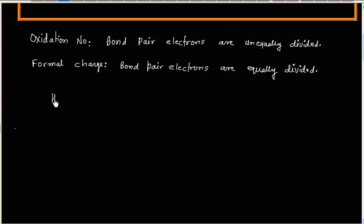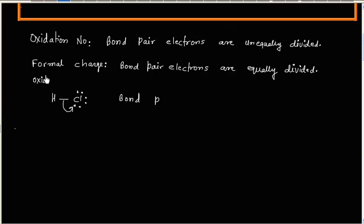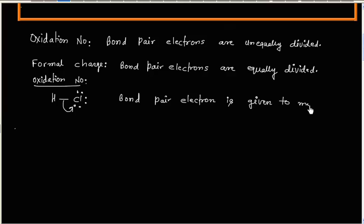Let us try an example. For the HCl molecule, calculate the oxidation number of chlorine and hydrogen. For oxidation number, bond pair electrons are given to the more electronegative atom. So bond pair electrons go to the more electronegative atom.